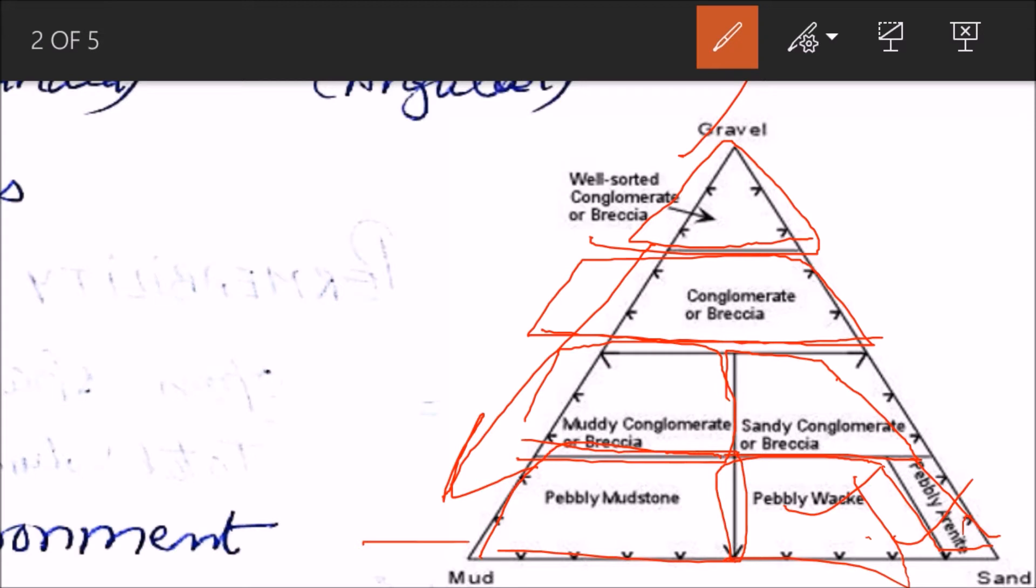If in the matrix there is 10 percent clay or less, then it is called arenites. Otherwise it is called wacke. As you move from here to here - arenites, then wacke, then mudstone. This is the basis on which conglomerates are classified.